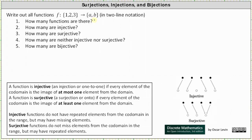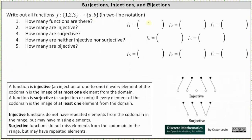Let's label these eight functions f sub one through f sub eight. In two-line notation, we have the inputs in the first row and the outputs in the second row. For each function, the inputs are one, two, and three. Let's put the elements one, two, and three in each row one.